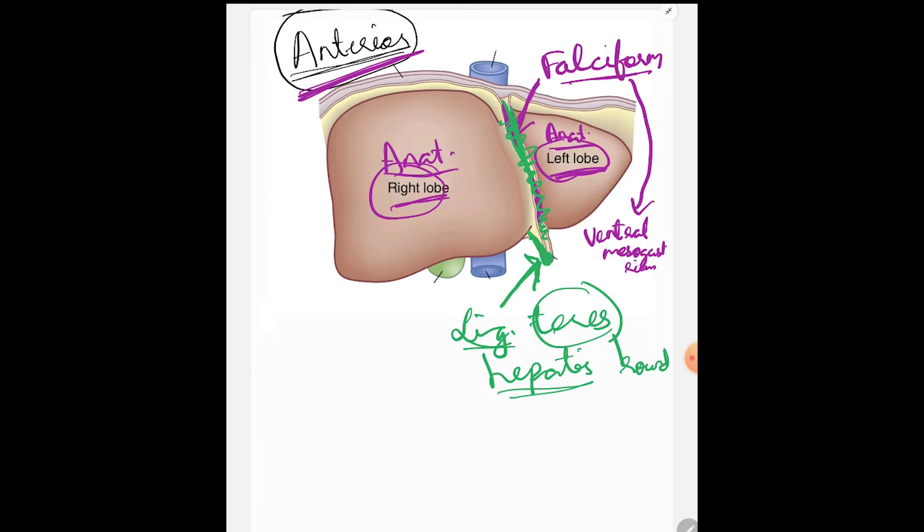Now, ligamentum teres can also be asked what is the derivative of. It is a derivative of umbilical vein. You can also be specific. You can say that the umbilical vein that is remaining here is the left umbilical vein. That is also correct but your answer is umbilical vein. So, these two are very common questions that are asked.